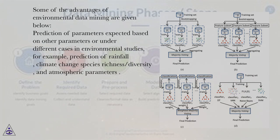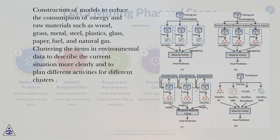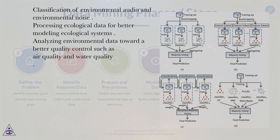Some of the advantages of environmental data mining include: prediction of parameters expected based on other parameters or under different cases — for example, prediction of rainfall, climate change species richness/diversity, and atmospheric parameters; construction of models to reduce the consumption of energy and raw materials such as wood, grass, metal, steel, plastics, glass, paper, fuel, and natural gas; clustering items in environmental data to describe the current situation more clearly and plan different activities for different clusters; classification of environmental audio and noise; and processing ecological data for better modeling ecological systems.